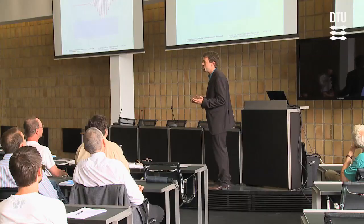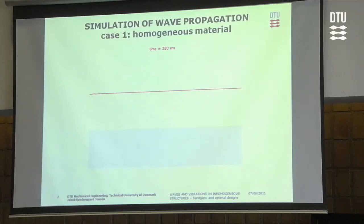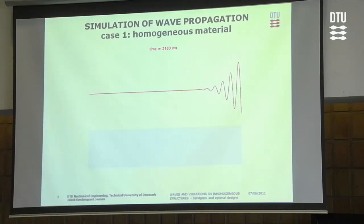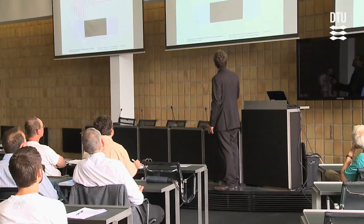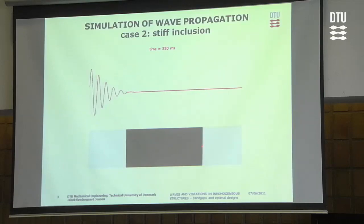Imagine wave propagation in a material. The gray box at the bottom represents the material, and the line represents the wave pulse propagating through it. If we put an obstacle in front of a wave, something happens. We will now put an obstacle in the form of an inclusion of a different type of material.